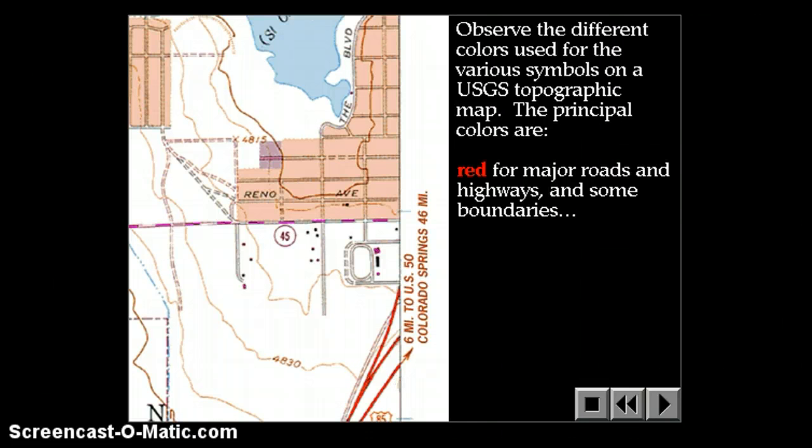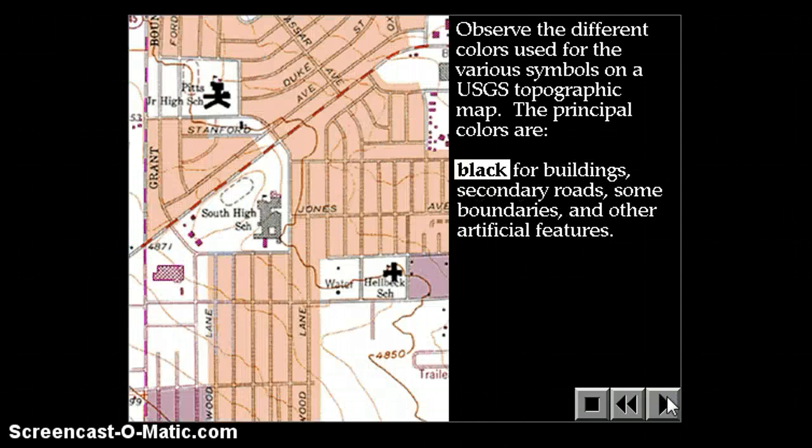Observe the different colors used for the various symbols on USGS topographic maps. The principal colors are red for major roads and highways and some boundaries, black for buildings, secondary roads, some boundaries, and artificial features.